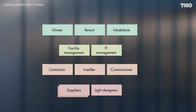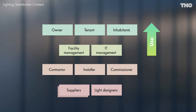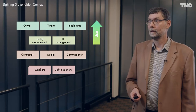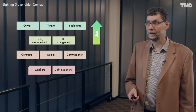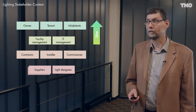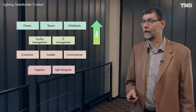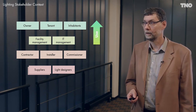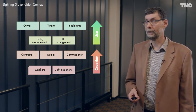In the lighting example, we see many stakeholders — a complex playing field. For example, we have the owner, the tenant, and the inhabitants. Those people are the users of the building and they benefit from the lighting facilities in the system. In the building, we also have facility management and IT management who provide services to the owners, tenants, and inhabitants.